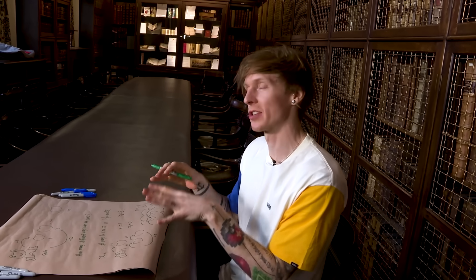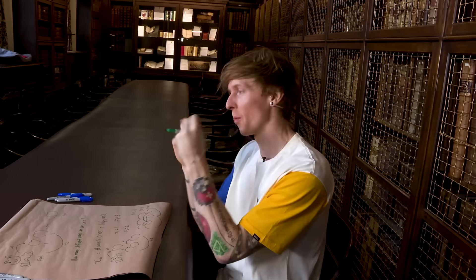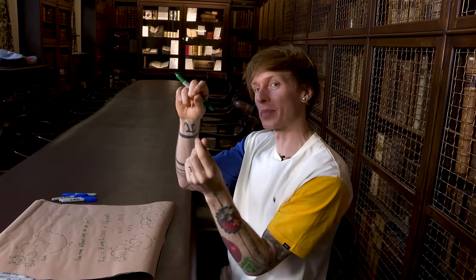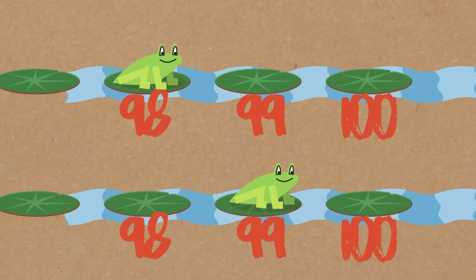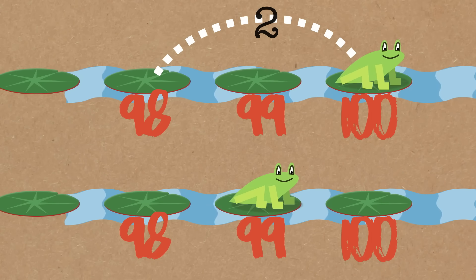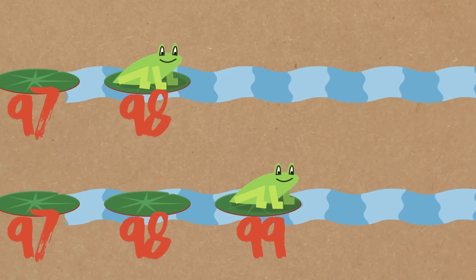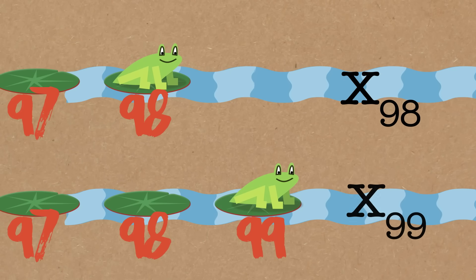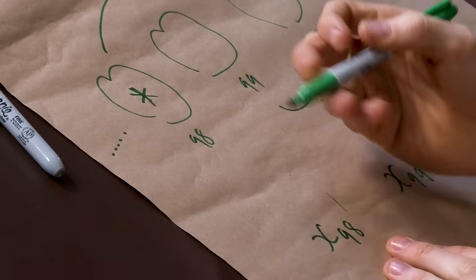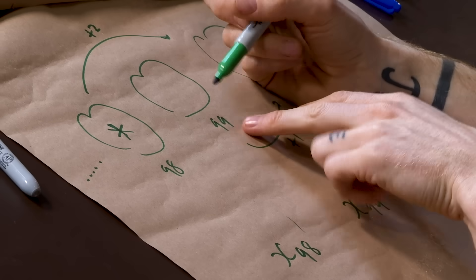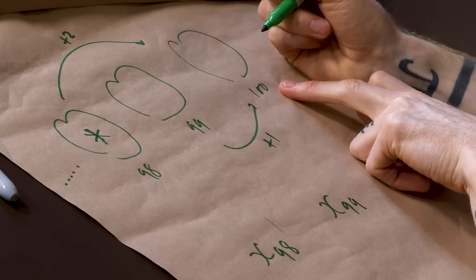What we're going to do instead is something called conditioning, and we're going to condition on what the last jump is. When we land on lily pad 100, we must have either jumped two from lily pad 98 or jumped one from lily pad 99. There is nothing else that could happen for us to end up on lily pad 100, and that's actually the key to unlocking this whole problem. To get to 100, we've either gone plus two from there or we've gone plus one from there. One of these has to happen.